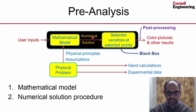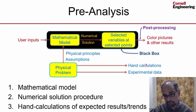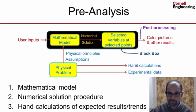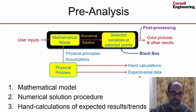In the third step of pre-analysis, we will look at hand calculations of expected results or trends. We'd be looking at this aspect so that we are going in with an expectation of what the black box is going to give us.